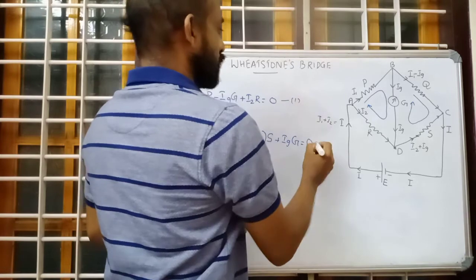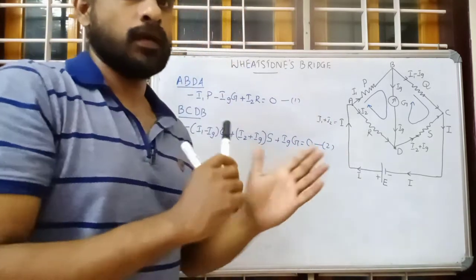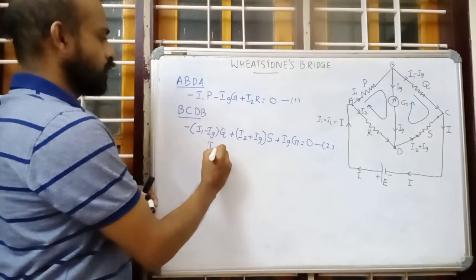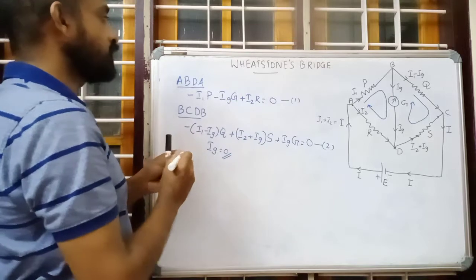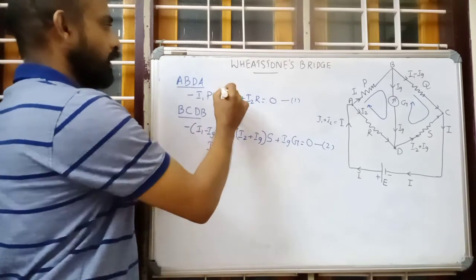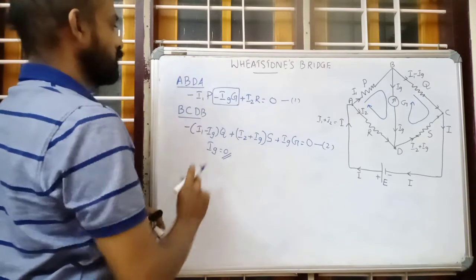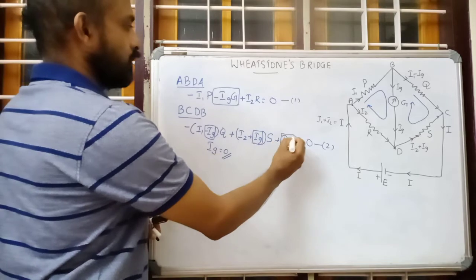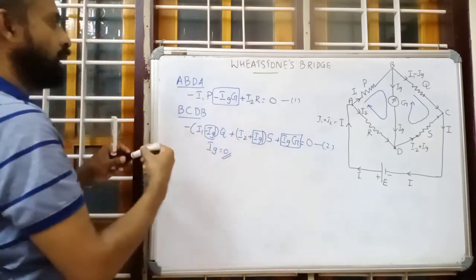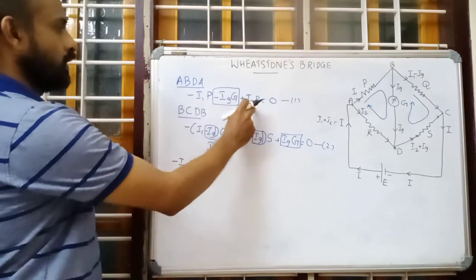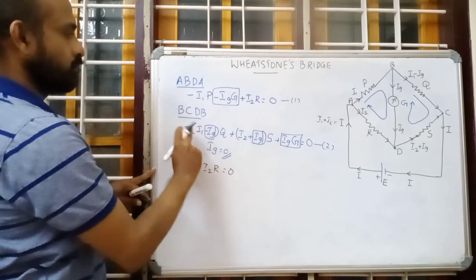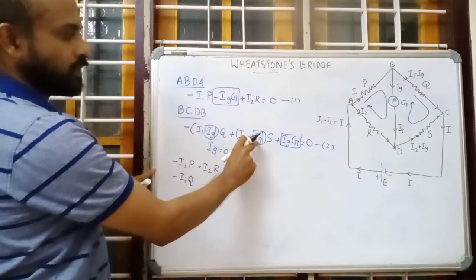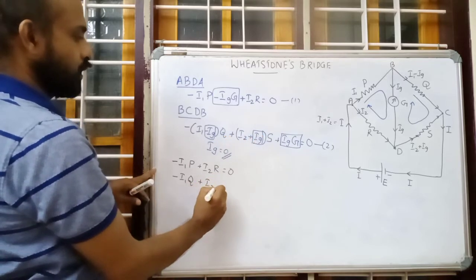Now we have equation 1 and equation 2. Our condition is that when resistors are arranged in a particular manner, galvanometer current should be zero. So let us assume Ig = 0. We need to modify these two equations by setting Ig to zero. In equation 1, the Ig·G term is eliminated. In equation 2, the Ig terms are cut. The remaining terms for loop ABDA are: minus I1·P plus I2·R = 0. For loop BCDB, the remaining terms are: minus I1·Q plus I2·S = 0.